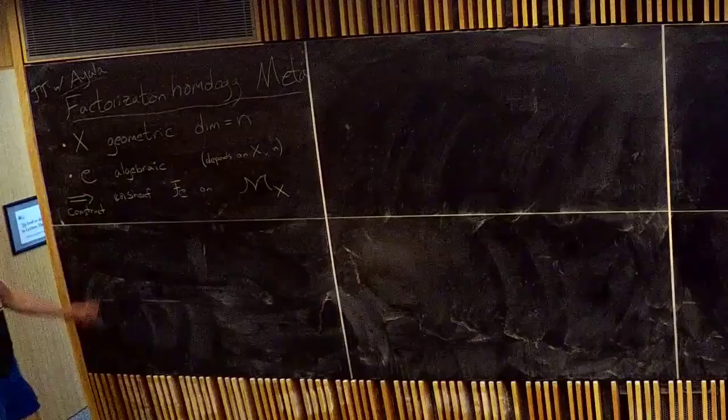We'll call this F_C on some auxiliary space M_X. The basic philosophy — the slogan — is that everything should satisfy descent on some moduli space M_X. There should be some universal, really interesting moduli space associated to X, such that whatever you want to study on X may not satisfy a local-to-global principle on X itself, but it should on M_X.